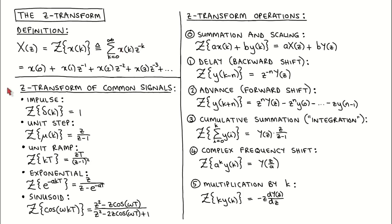In this video, we only state these transforms and use them in examples; we will prove some of them at a later stage. The Z-Transform of the digital impulse is equal to 1. The Z-Transform of a unit step is equal to Z divided by Z minus 1. The Z-Transform of a unit ramp, where the signal values are given by the time index K times the sampling period T, is equal to Z times T divided by Z minus 1 squared.